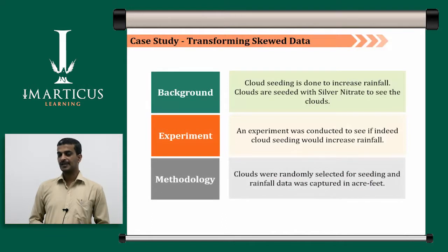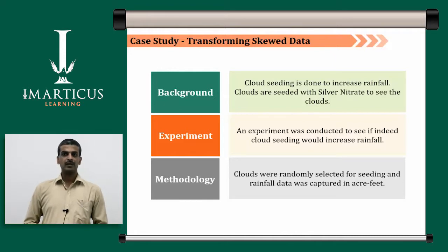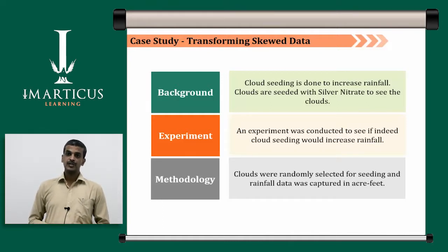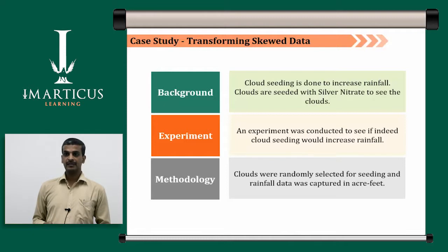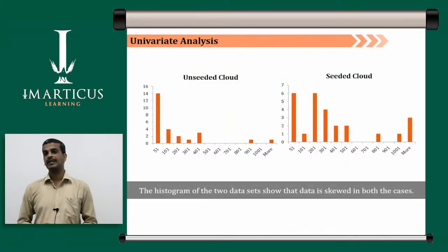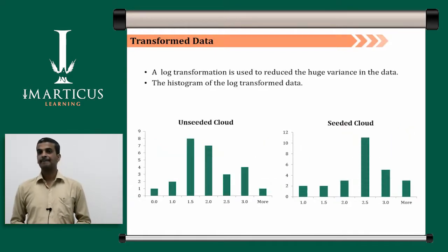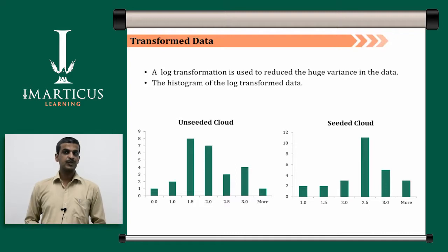A case study on transforming skewed data: cloud seeding is done to increase rainfall by seeding clouds with silver nitrate. An experiment was conducted to see if cloud seeding increased rainfall. Clouds were randomly selected for seeding, and rainfall data was captured in acre-feet. The univariate analysis of unseeded and seeded clouds shows both datasets are skewed. A log transformation is applied to reduce the huge variance in the data, and the histogram of the log-transformed data shows a more normalized distribution.